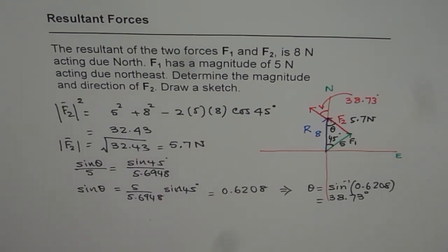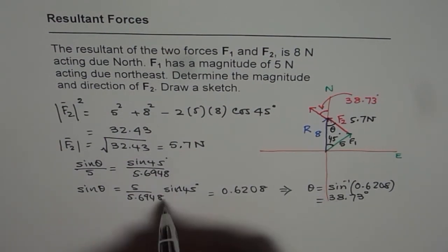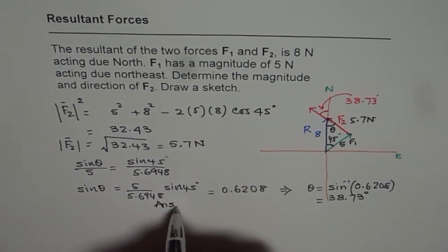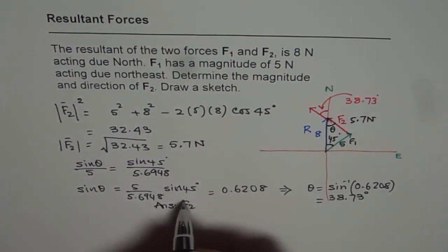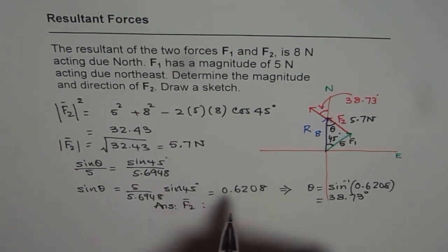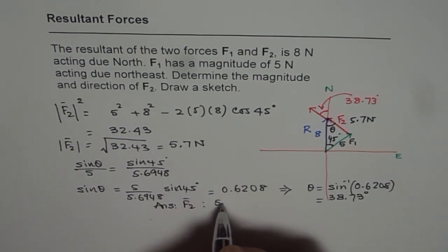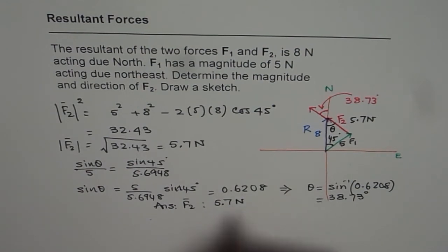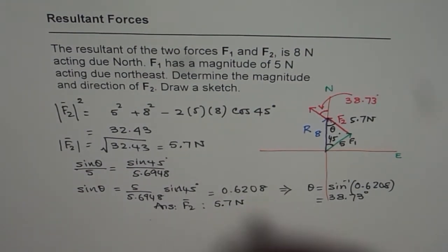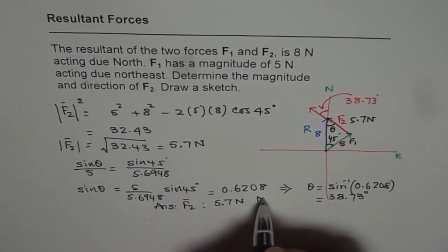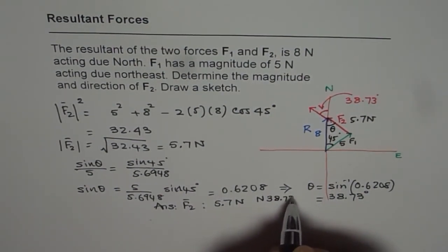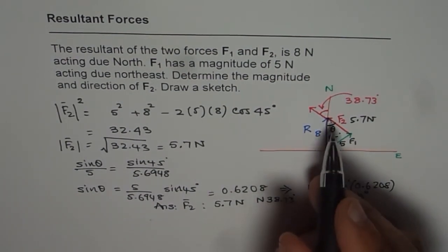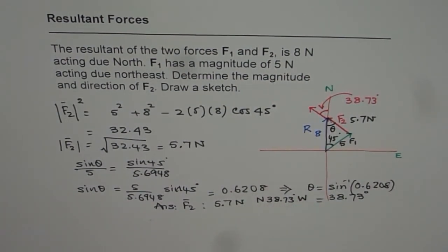So now we have both magnitude and direction. So our answer is F2 force is a force of 5.7 newtons and the direction is from north, 38.73 degrees towards west. So that is how we can write down our answer.